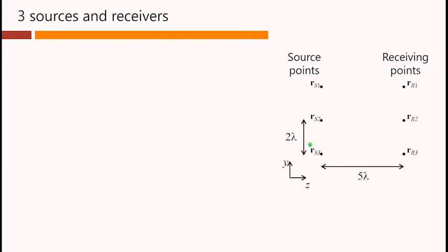So let's consider three sources and receivers. A set of source points, which we could think of as loudspeakers. A set of receiving points, which we could think of as microphones. There's some separation between them. Here we've chosen that as just five wavelengths.